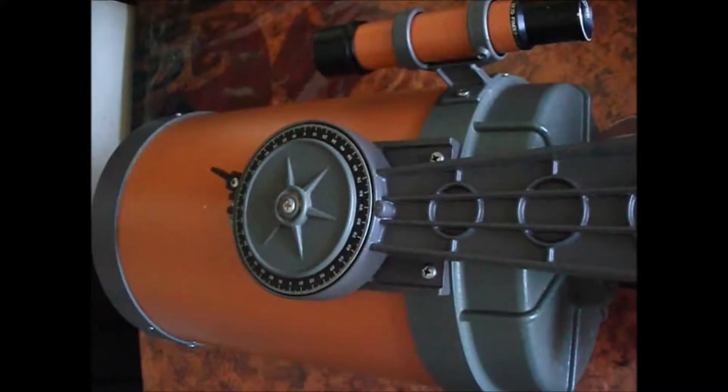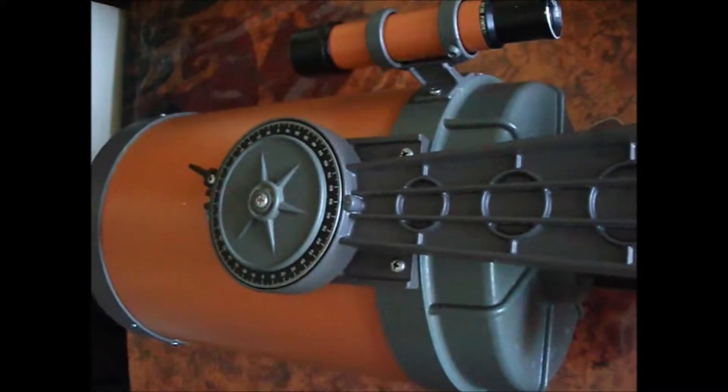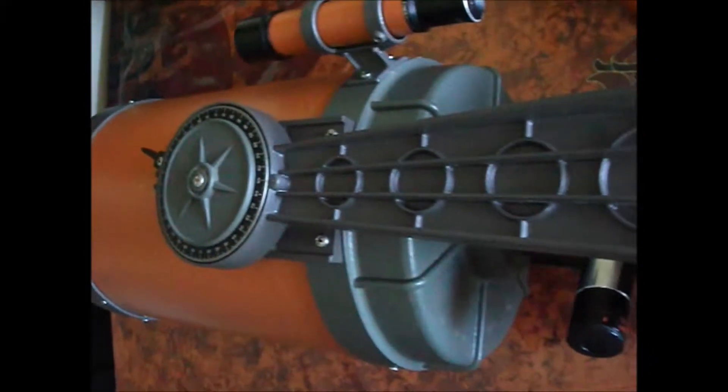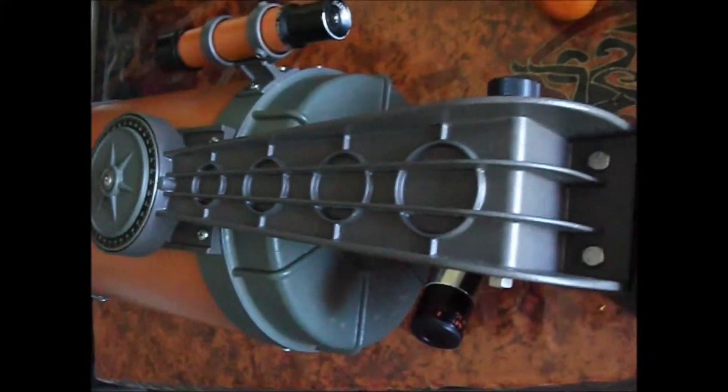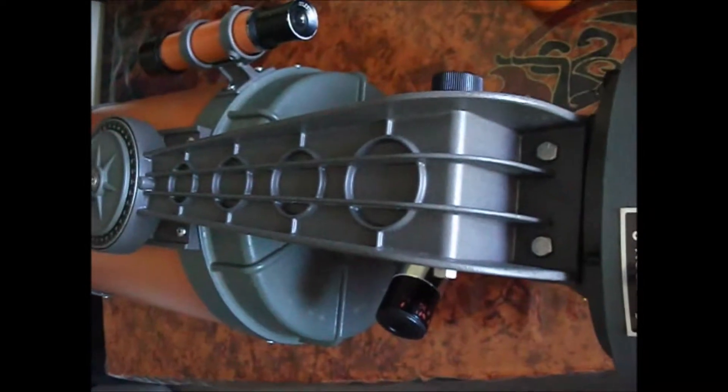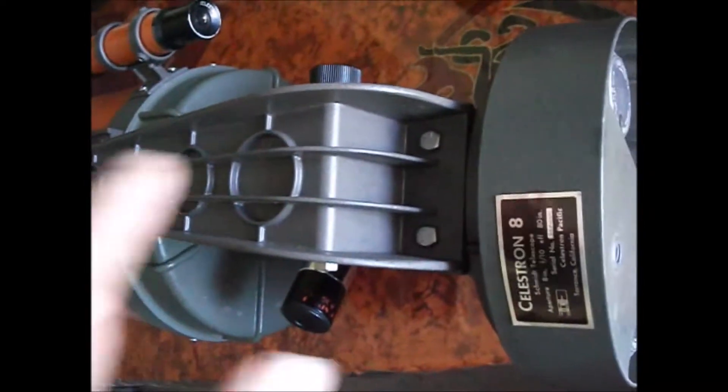This is an old Celestron C8 that did have very bad backlash in the drive gears. It was quite difficult to use. It was so bad it would even clunk back and forth in the breeze.